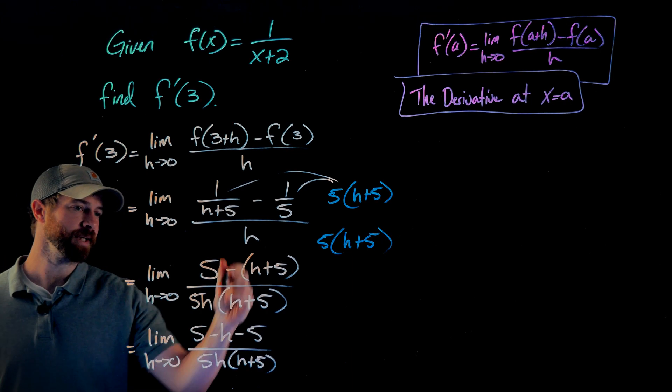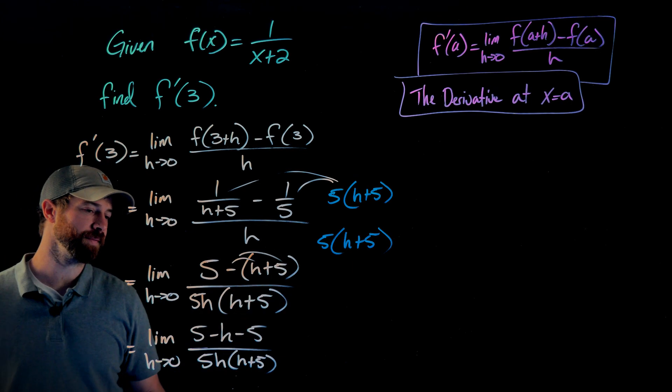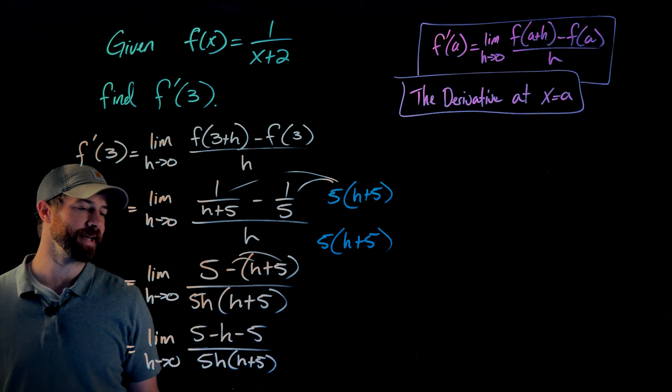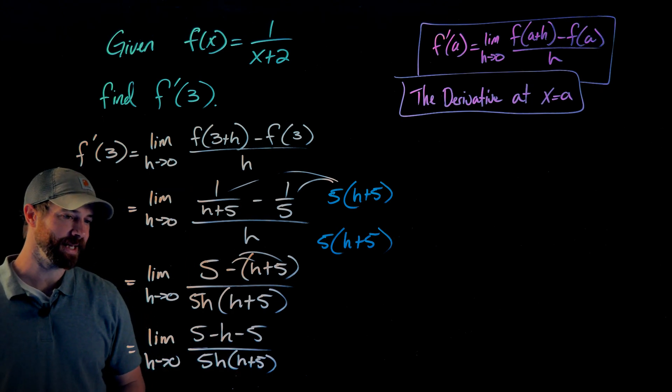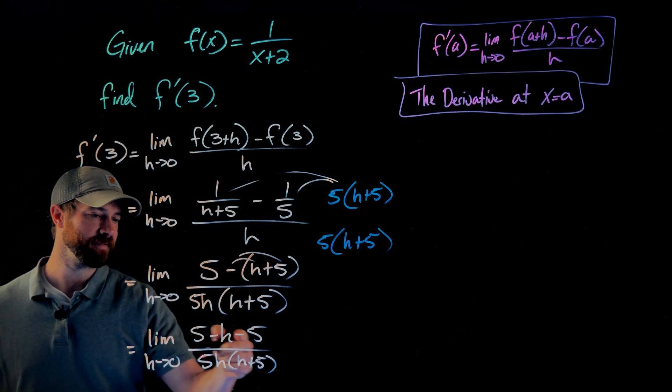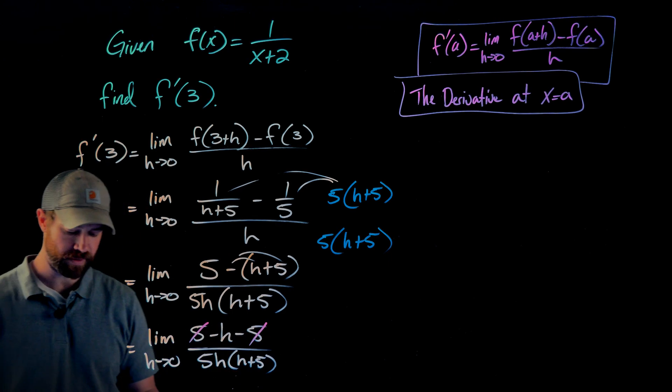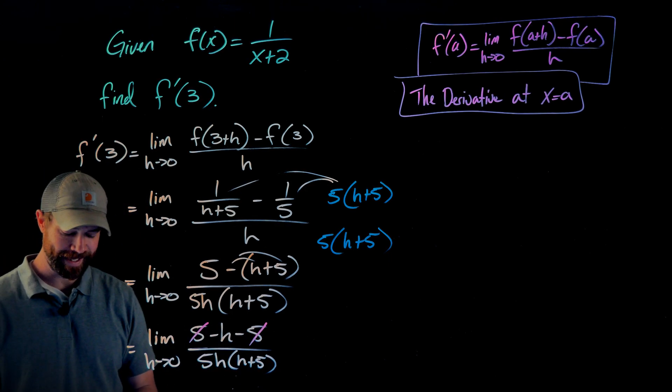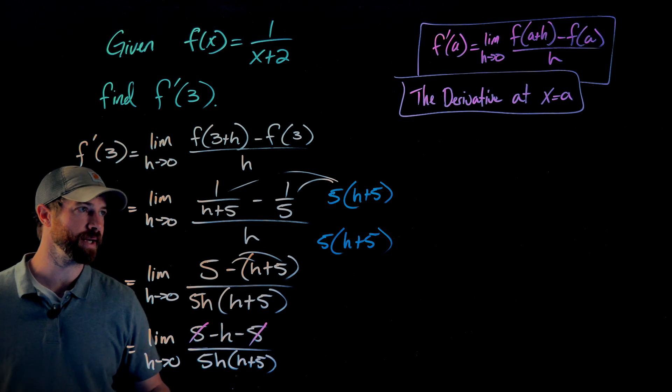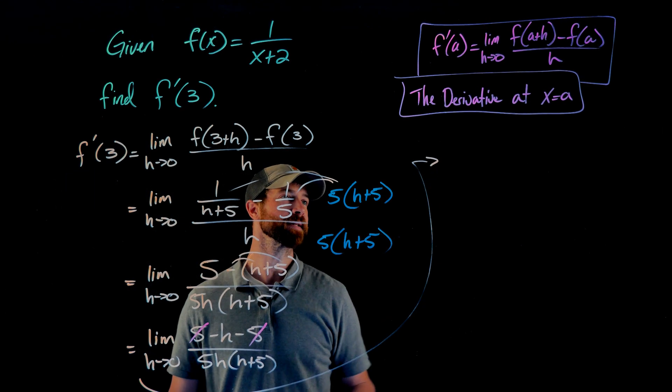So from here to here, all I did was I distributed this negative to both of these terms here to get a negative h and a negative 5. You will see that the 5 and negative 5, or 5 minus 5, cancel each other out, leaving me with just a negative h up in the numerator. Let me go over here and rewrite this.